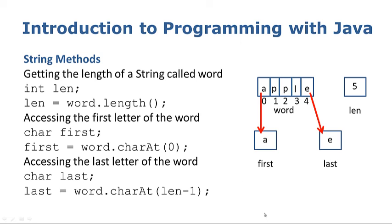So we have a couple of methods there for use with strings. .length() gets the length of the word. charAt() allows us to access a letter at a particular index or a character at a particular index. 0 will always bring us to the first character in the word, and len minus 1 or the length minus 1 will always take us to the last character in the string.